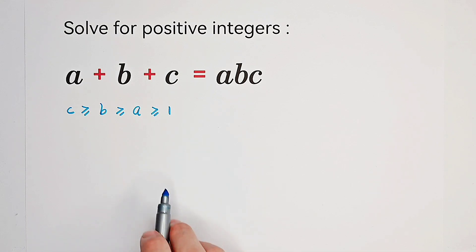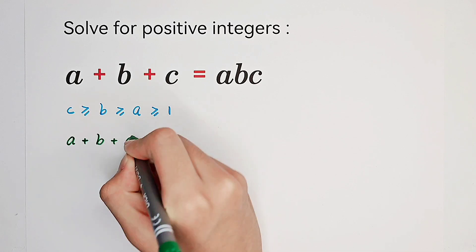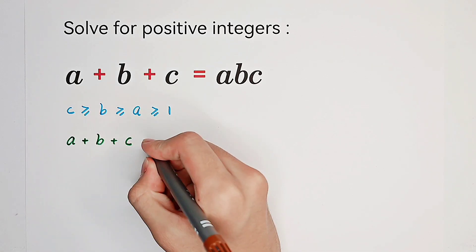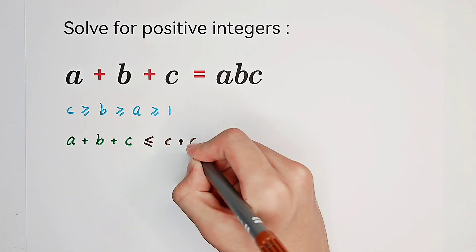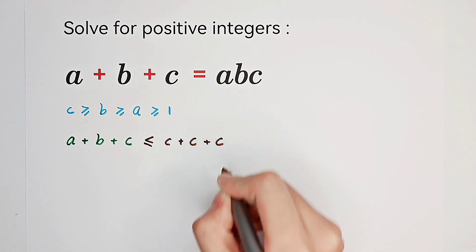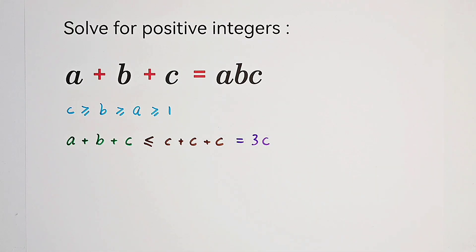So now, if we have the order of A, B and C, then we can simplify this equation. Now you see, the sum of A, B and C is clearly less than or equal to C plus C plus C. And C plus C plus C is actually 3C. So we see, the sum of A, B and C is clearly less than or equal to 3C, because A is less than or equal to C, and B as well.